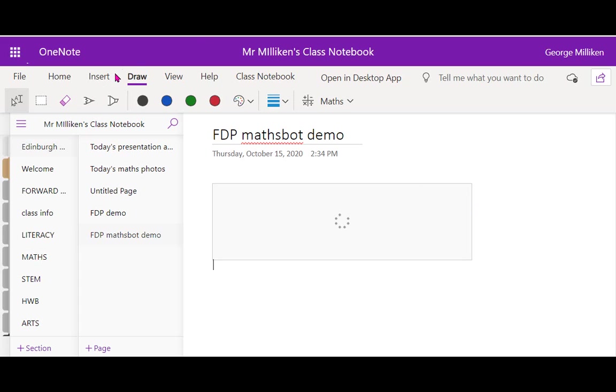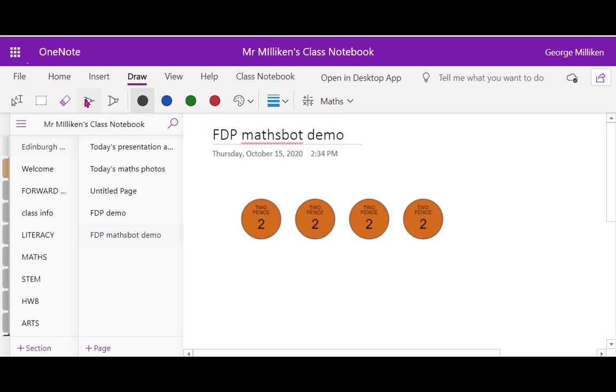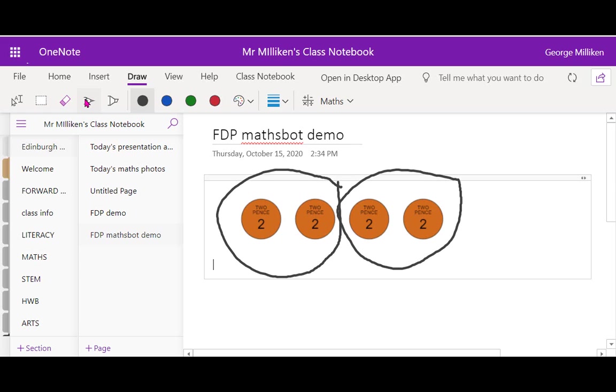And this is where OneNote comes in really handy. If I go up to draw and I select my pencil. So because I have a touchscreen device, it's really easy to notate the image and I can just write on top of that. So very similar to working with a whiteboard or a jotter but you can do that digitally so whether the learners are in or out of the class, they're able to access that and replicate the way that they would work traditionally.